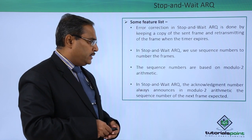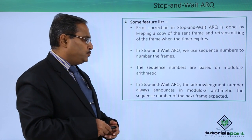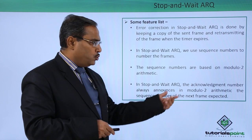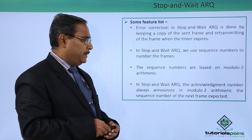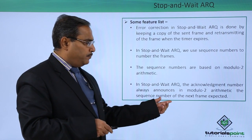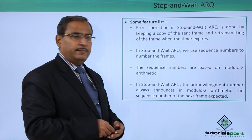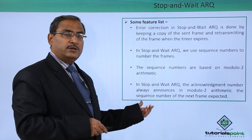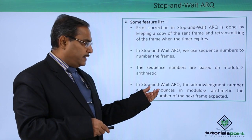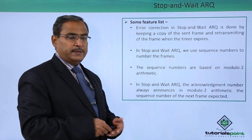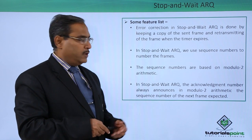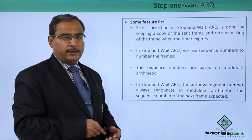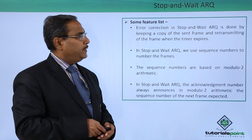In Stop and Wait ARQ, the acknowledgement number always announces, in modulo-2 arithmetic, the sequence number of the next frame expected. That sequence number of the next frame expected will also be expressed in the form of modulo-2 arithmetic, and that will be the numbering in the acknowledgement.